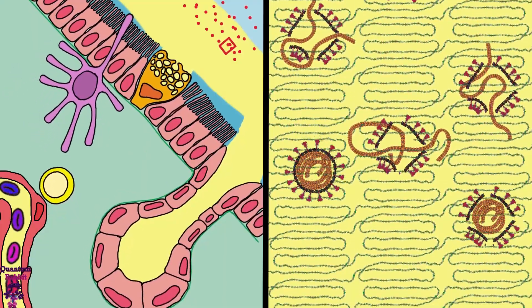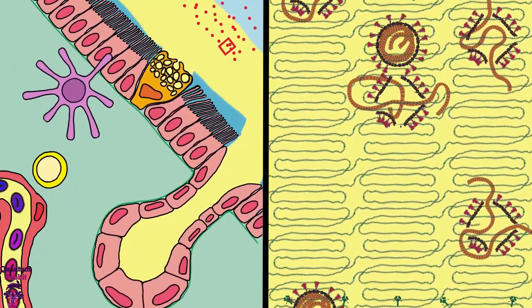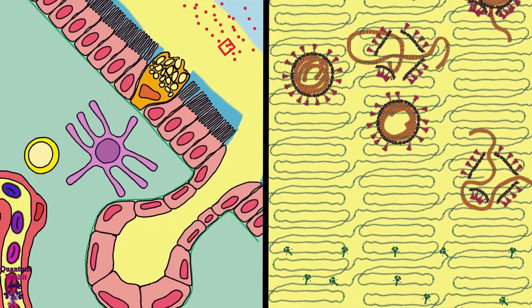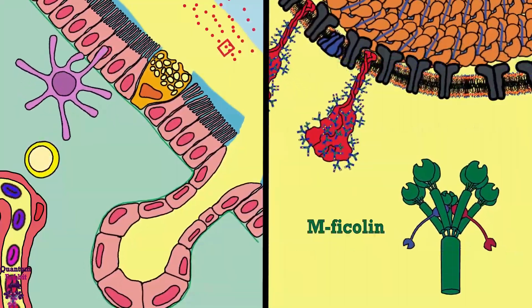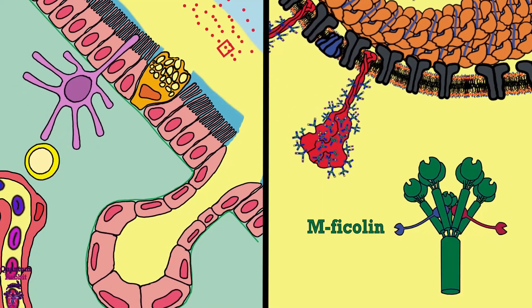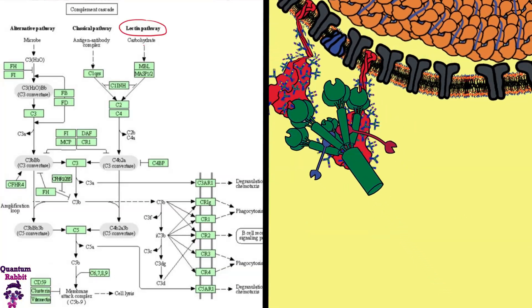But defensins are not the only defense in mucus. It also contains complement proteins that are even more aggressive against pathogens. The MBL ficolin protein binds to the oligosaccharides of the spike protein. Together, a protease called MASP1 is activated.